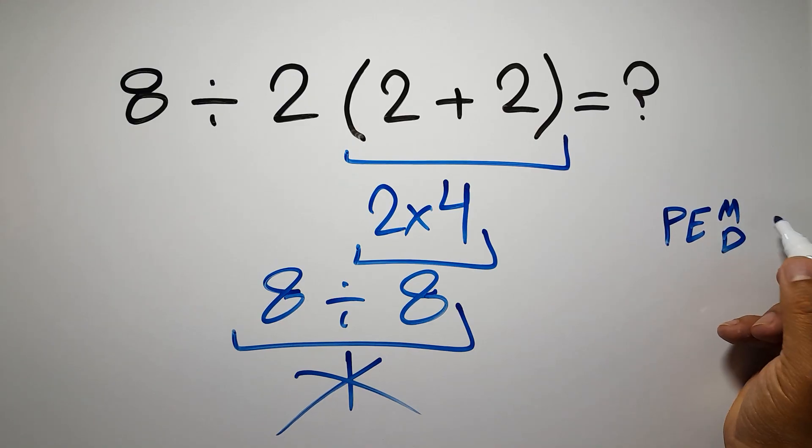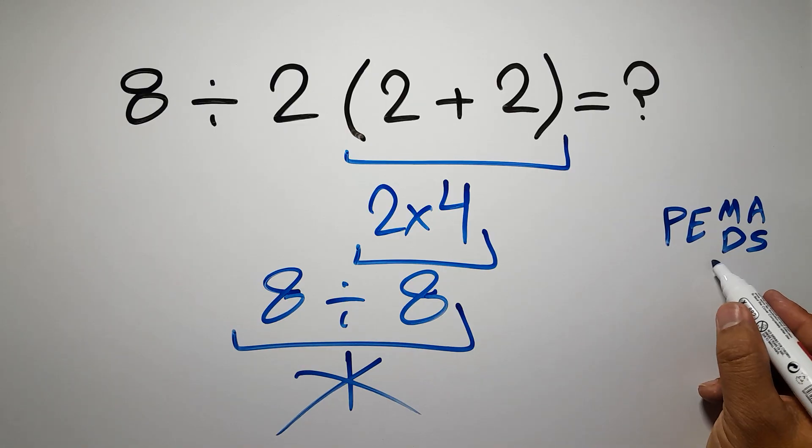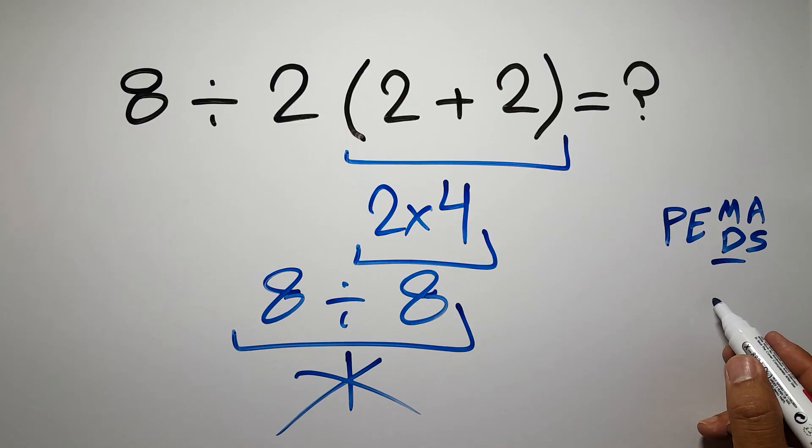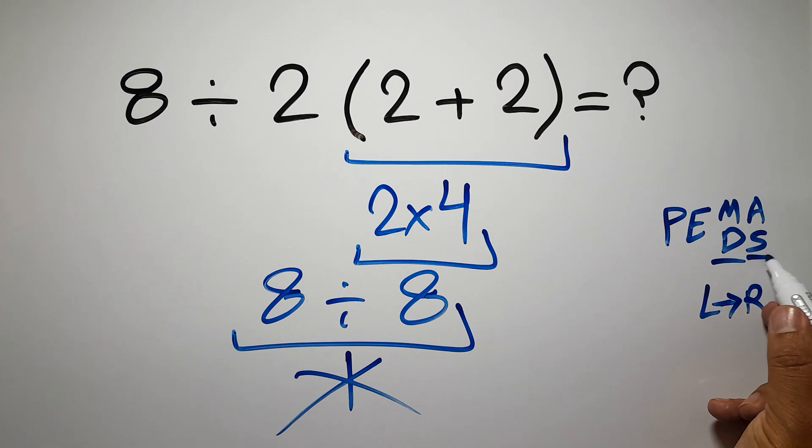And the final addition or subtraction. Remember that multiplication and division have equal priority, and we have to work from left to right, and the same applies to addition and subtraction.